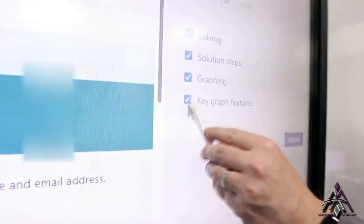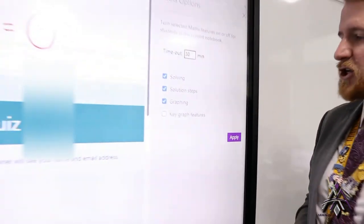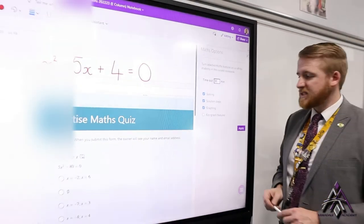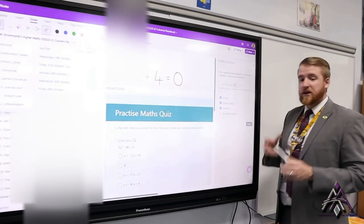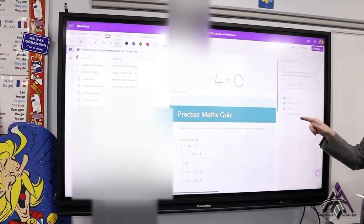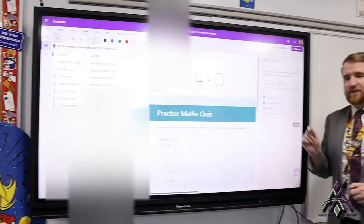So I might not want them to be able to see the graph features or not show them that. So I can then untick that, hit apply and when the young people go in to use maths assistant they'll not get the key graph features.